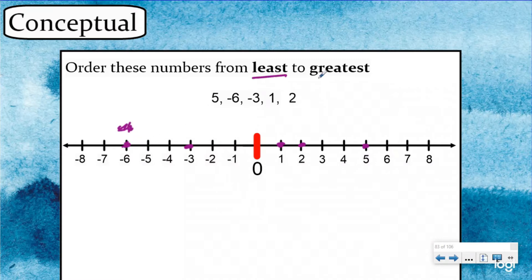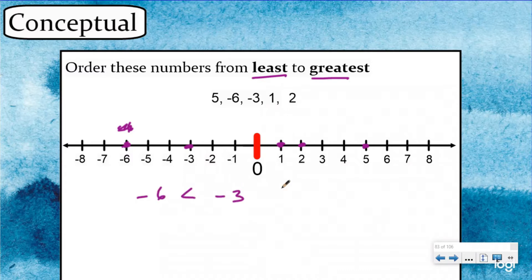If I want to go from least to greatest, that means I'm going from left to right. The further you are to the left, the smaller your value is. And the further you are to the right, the greater your value is. So using an inequality statement: the furthest to the left would be negative six, and that's going to be less than negative three, which is less than positive one, which is less than two, which is less than five. Five is our biggest number because it's furthest to the right.